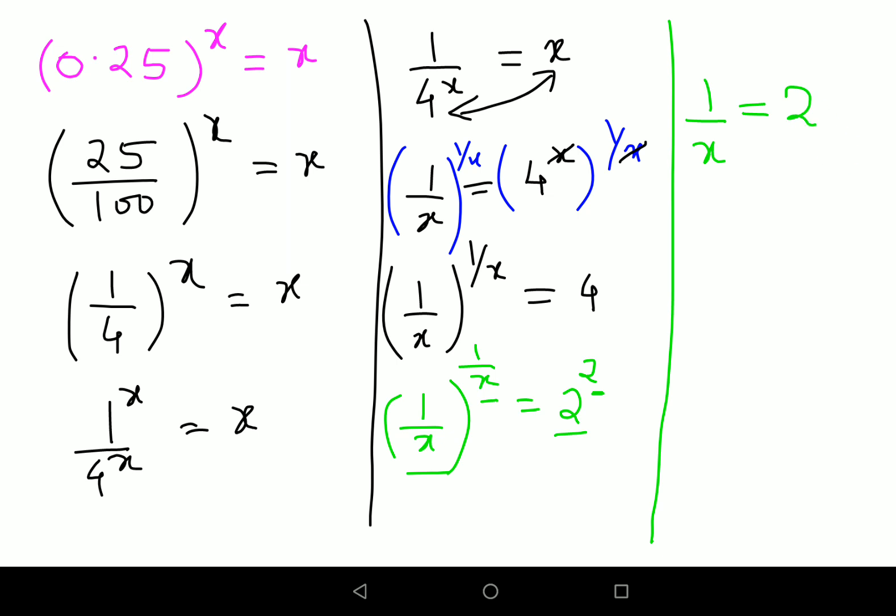So I can say 1 upon x equals to 2. Therefore, the x value is nothing but 1 upon 2.